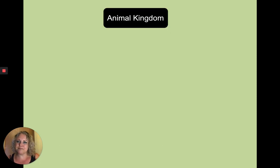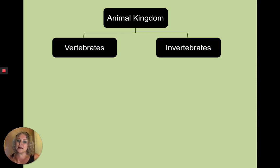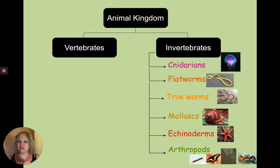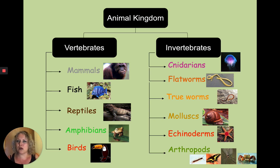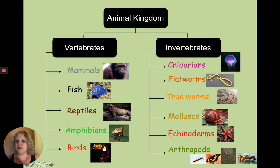The animal kingdom can be classified into vertebrates and invertebrates. Vertebrates have a backbone; invertebrates don't. Invertebrates include jellyfish, flatworms, mollusks, slugs, snails, echinoderms, and arthropods. We're going to focus on vertebrates — those with backbones: mammals, fish, reptiles, amphibians, and birds. A good way to remember all of these is MR FAB — Mammals, Reptiles, Fish, Amphibians, Birds.